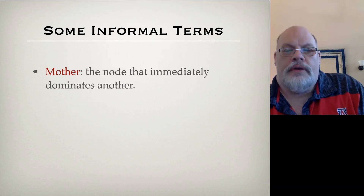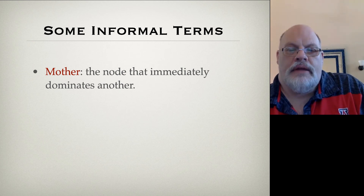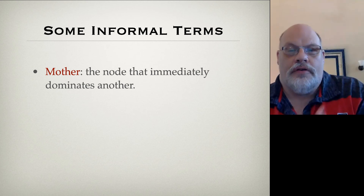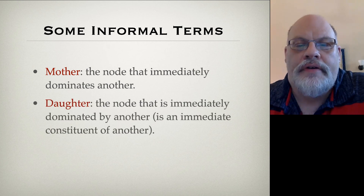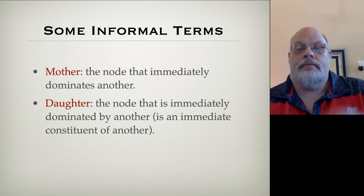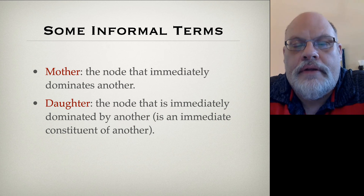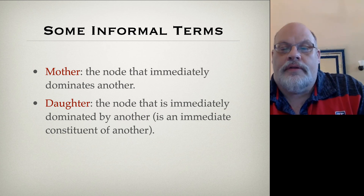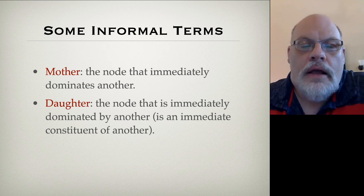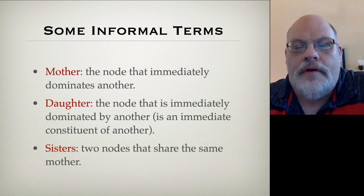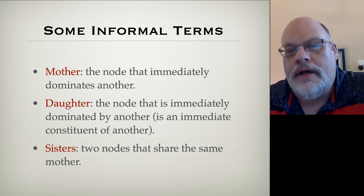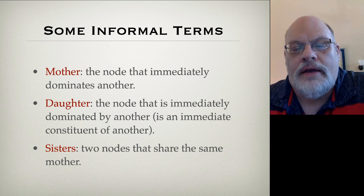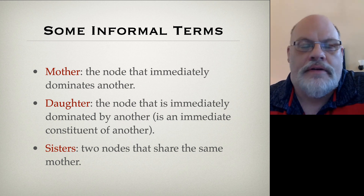Here are some informal terms. Another way of expressing immediate domination uses genealogical terms: mother and daughter. A mother is a node that immediately dominates another, and a daughter is a node that is immediately dominated by another. Another way to describe daughters is as immediate constituents of. Remember, 'constituent of' is the reverse of domination, and 'immediate constituent of' is the reverse of immediate domination. Sisters are nodes that share the same mother — two nodes both immediately dominated by a single node.